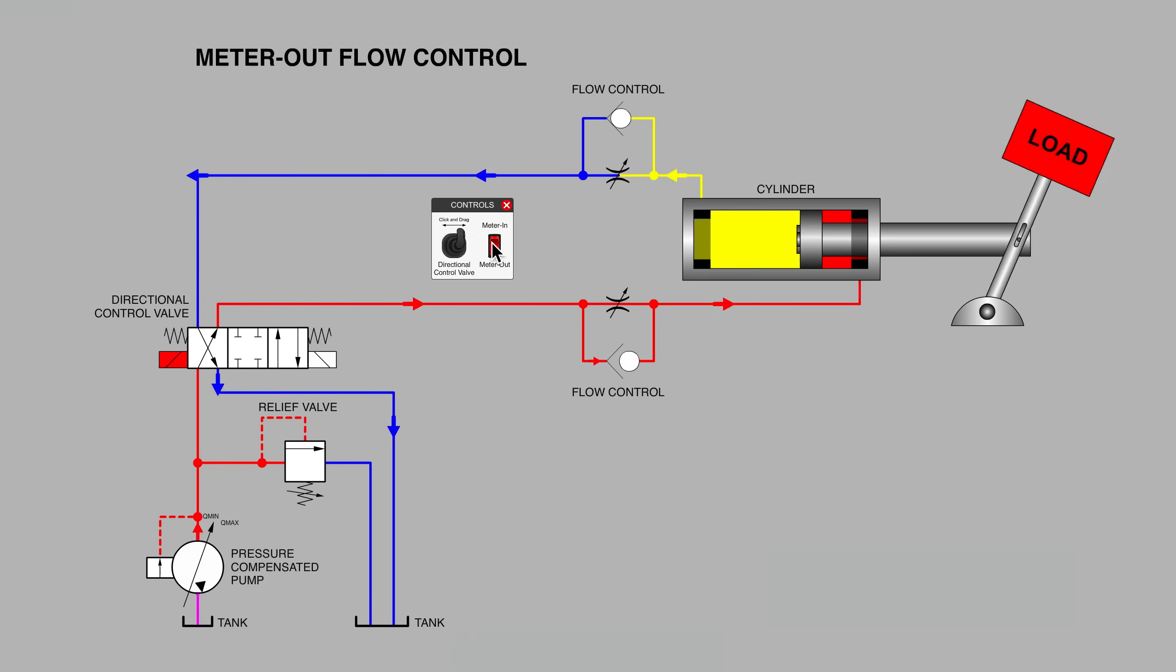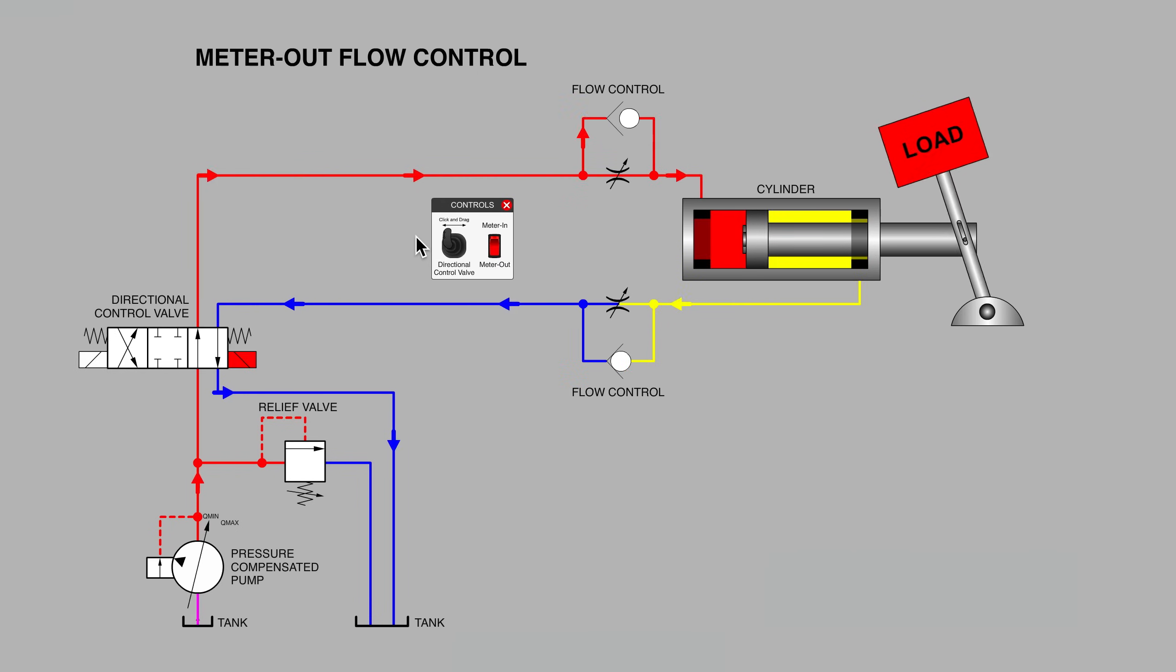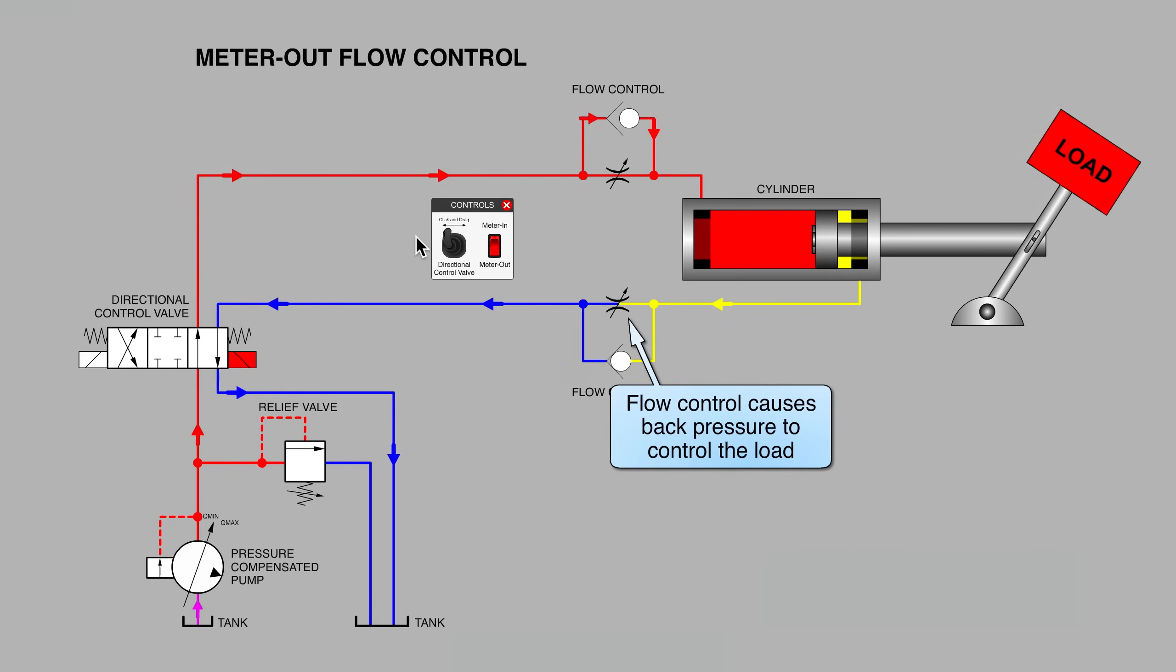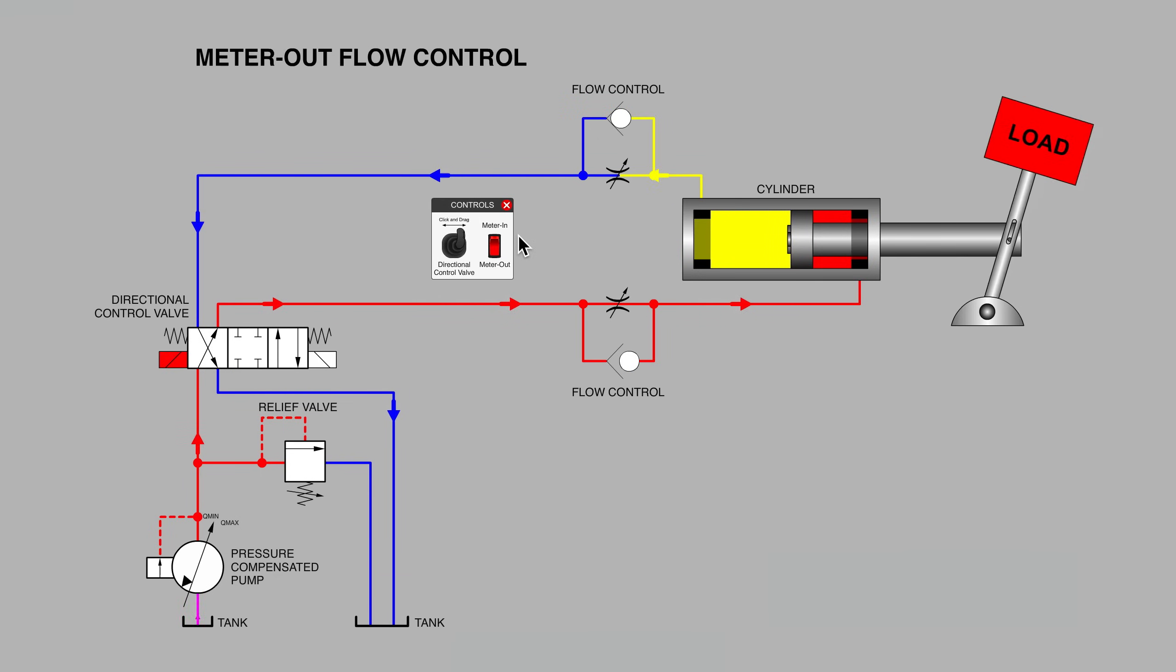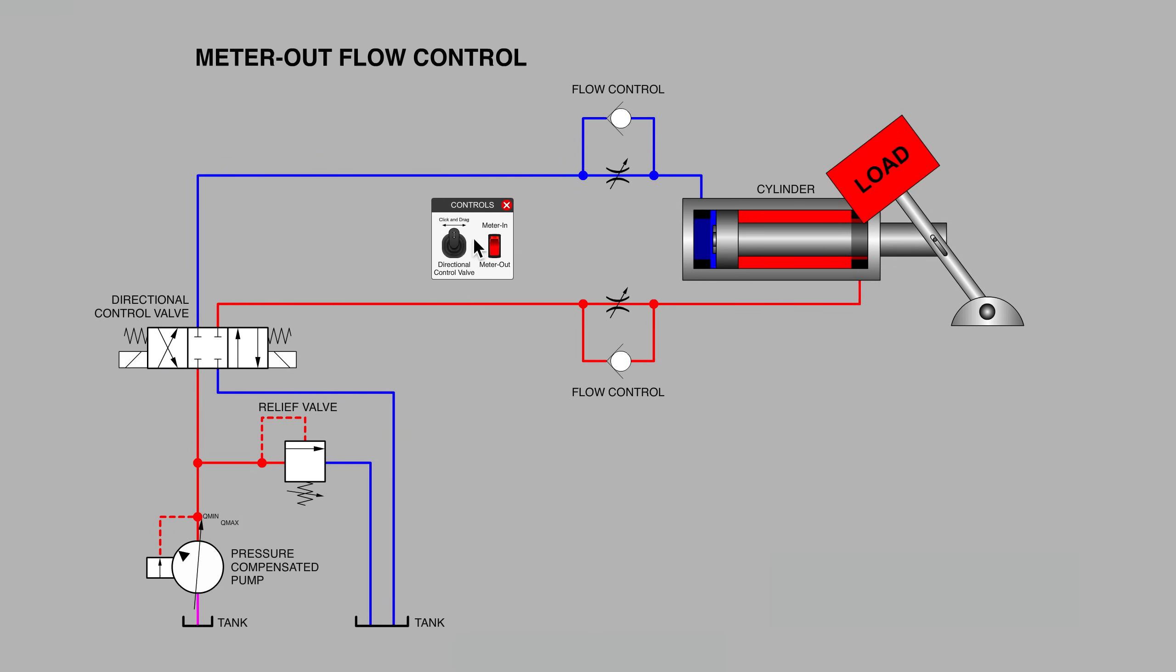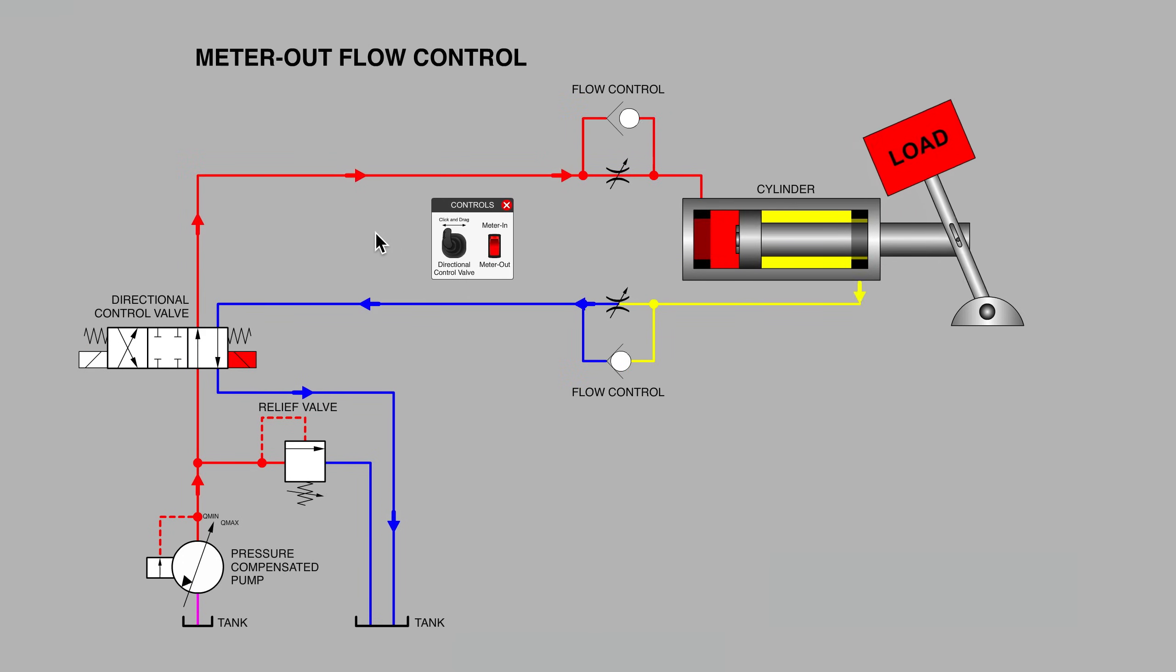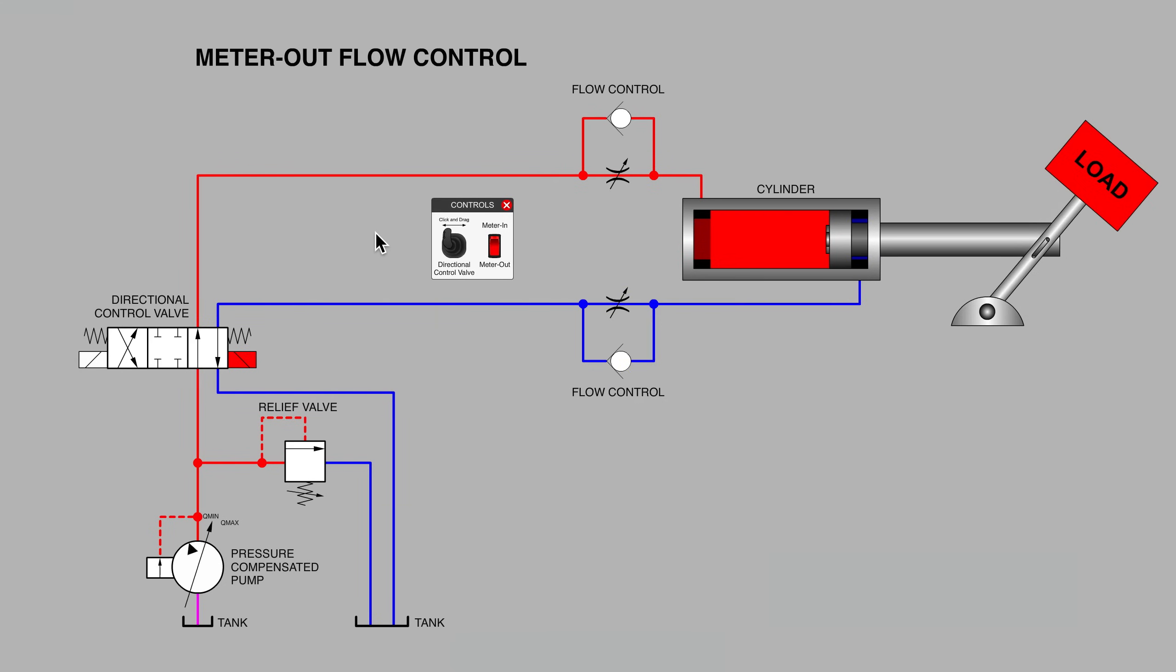And really, whenever there's a runaway load, a flow control is a little overly simplistic. And in many cases, when you need to move the load quickly, a counterbalance valve is a much better choice. And of course, no risk to pressure intensification on the rod side, as long as that counterbalance valve has been chosen and specified correctly.